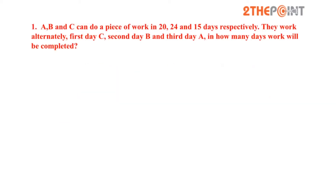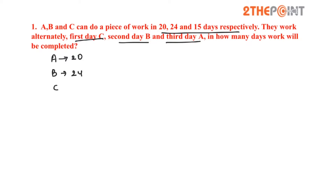A, B and C can do a piece of work in 20, 24 and 15 days respectively. They work alternately — first day C, second day B and third day A. In how many days will the work be completed? It is given that A completes the work in 20 days, B does it in 24 days and C does it in 15 days.